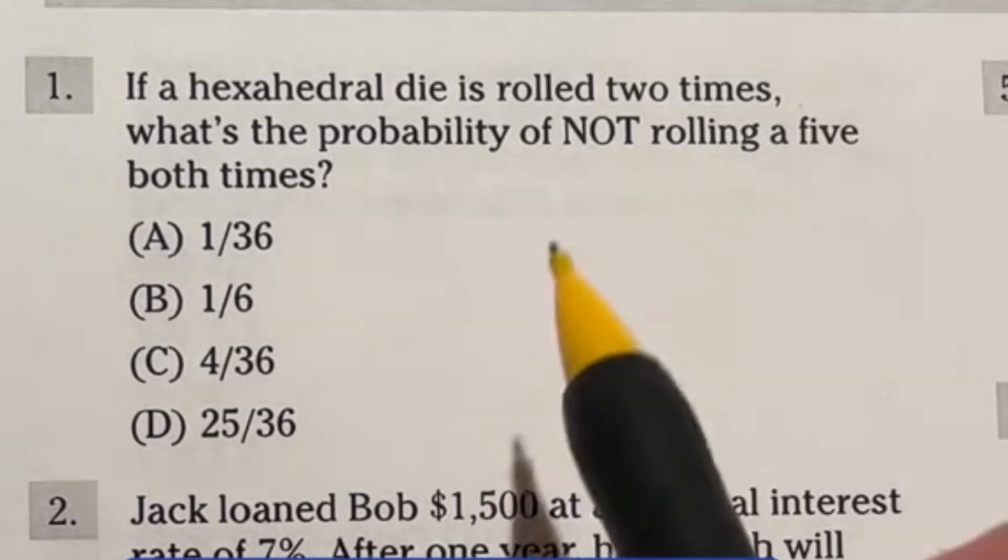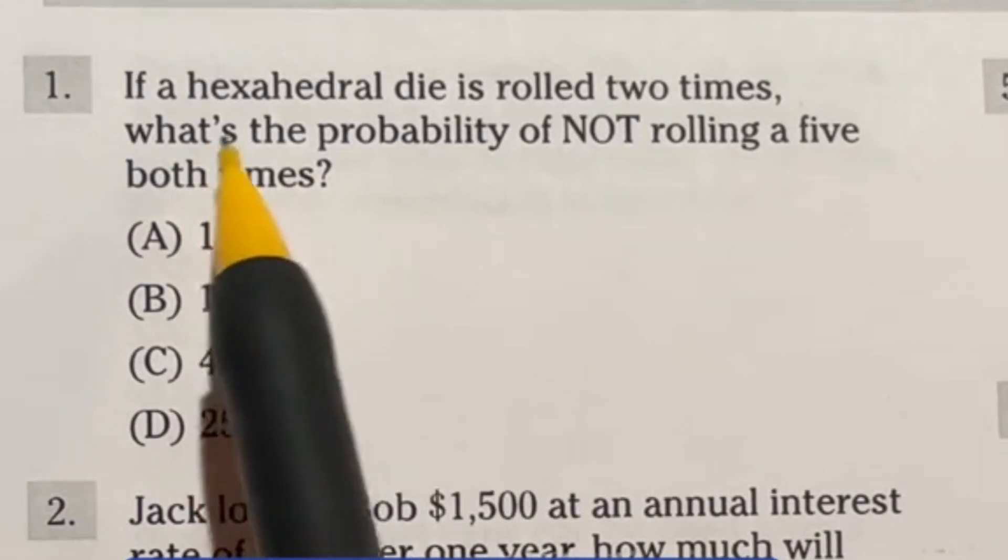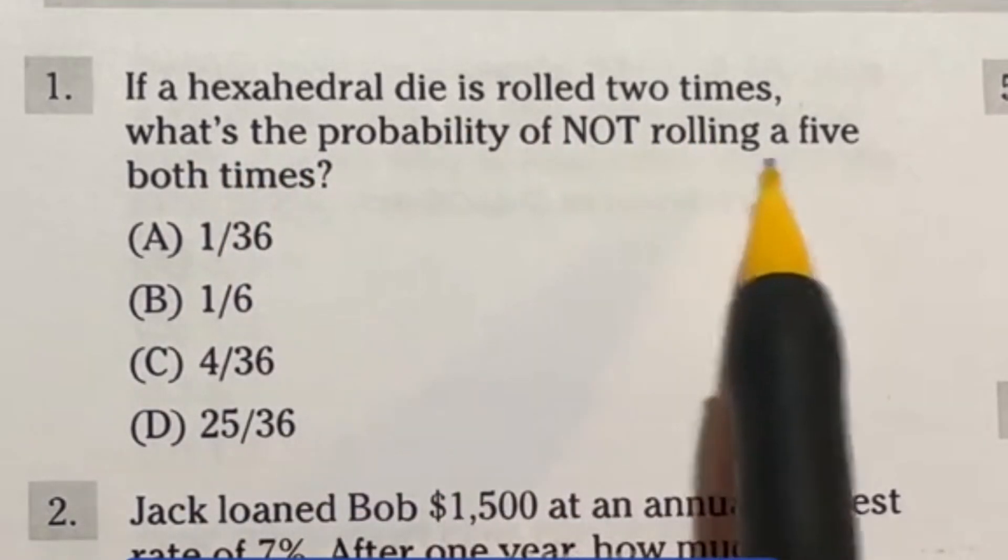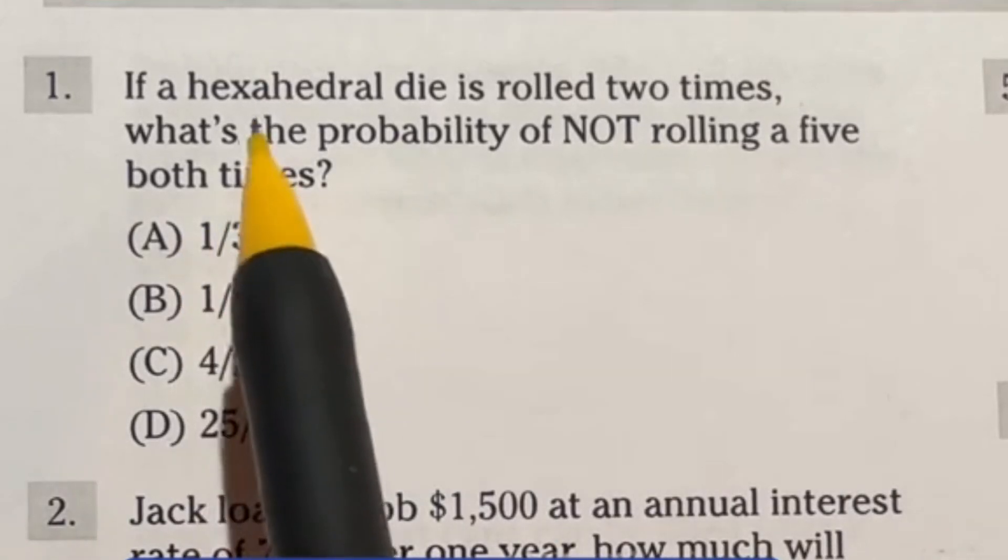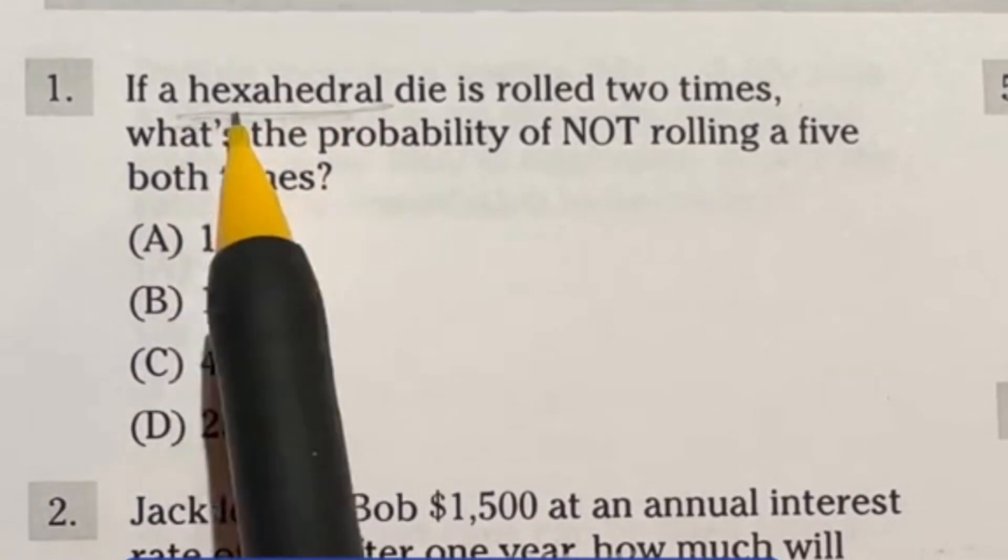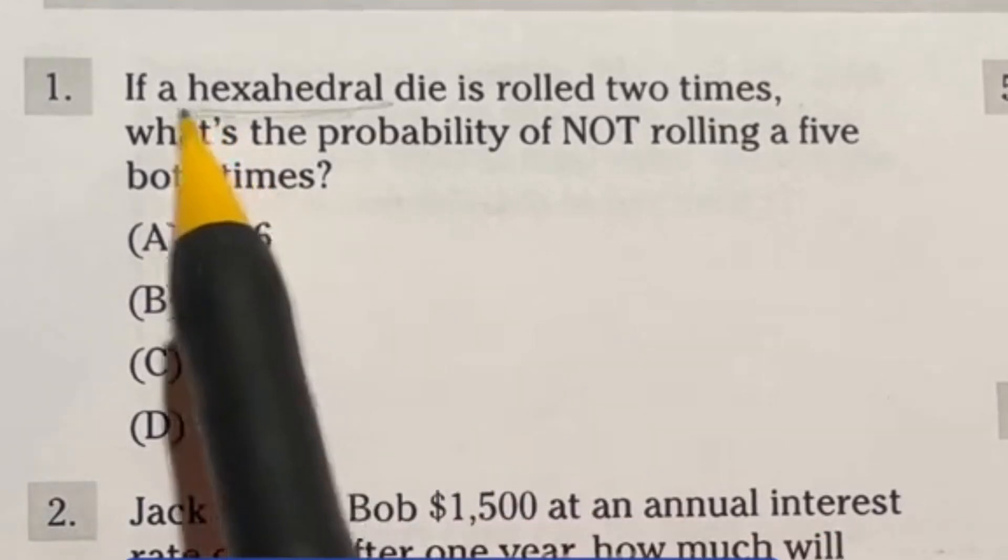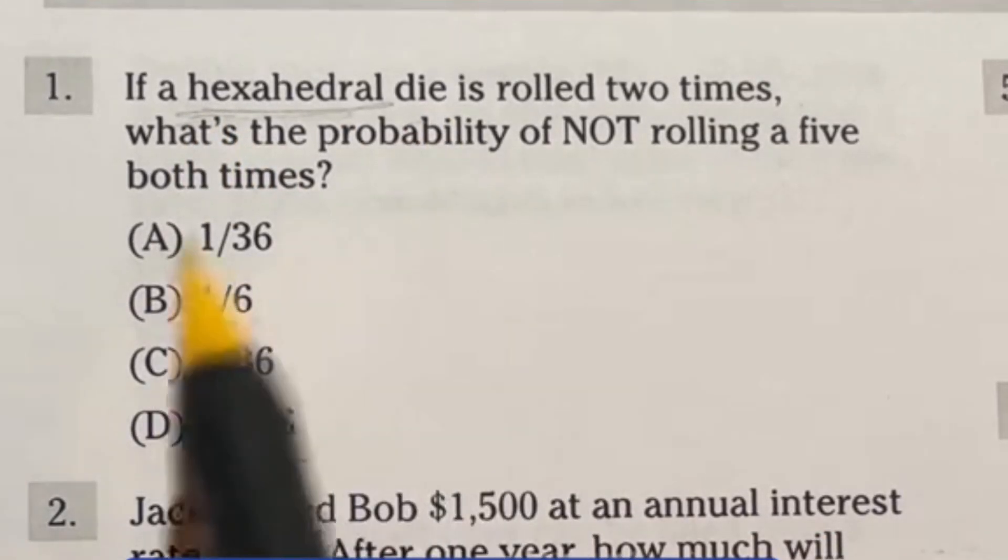Number one off the arithmetic reasoning of the ASVAB. It says if a hexahedral die is rolled two times what's the probability of not rolling a five both times? So in this case this right here might be our first catch-up hexahedral. Don't let that confuse you it's just a six-sided die. All right so that's just a vocab word they're throwing in there but it's just talking a six-sided die.